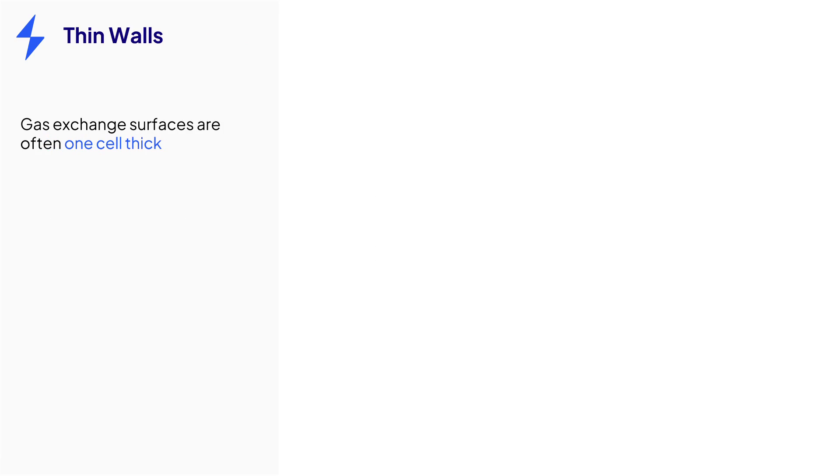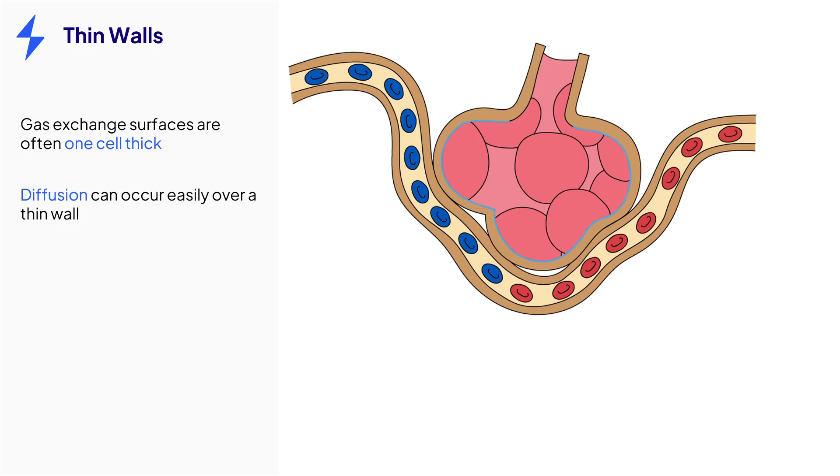Most gas exchange surfaces have walls that are only one cell thick, so there is a really short distance for gases to diffuse over. The alveoli within the lungs are adapted for this feature.